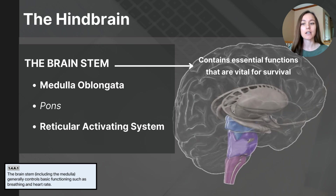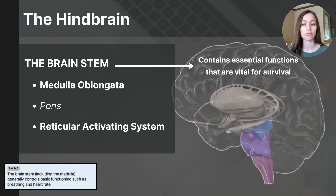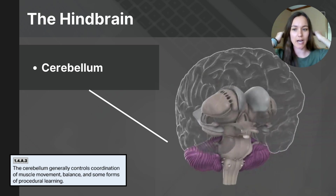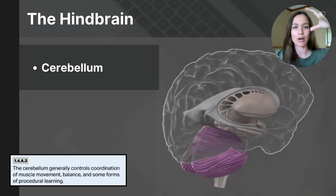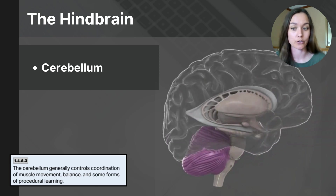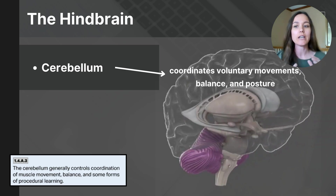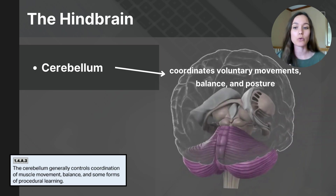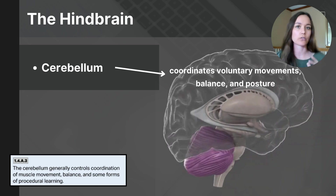The most important takeaway is that structures within the brain stem are important for our most essential functions — those necessary for survival and life. The next structure in the hindbrain is the cerebellum, located underneath the back side of the brain, sitting behind the brain stem. It actually looks like a seat that the wrinkly part of the brain is sitting on top of. About the size of a fist, it's referred to as the 'little brain.' The cerebellum is crucial for coordinating voluntary movements, balance, and posture, and helps fine-tune motor activities so movements are smooth and precise. It also plays a role in learning motor skills like riding a bike or playing a musical instrument.